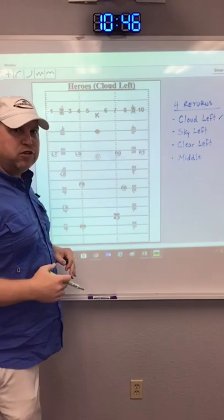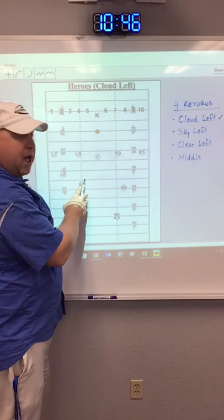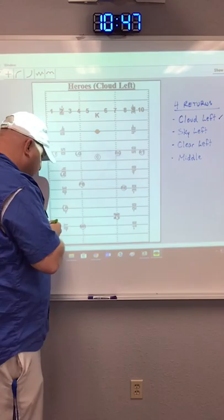But looking at our sky left return, let's first talk about alignment. In our cloud return, our fullback was on the 25 and pretty much centered in the field. He's now moved to the 32 and he's working off the hash that we know, because now we know that the ball is off-centered.